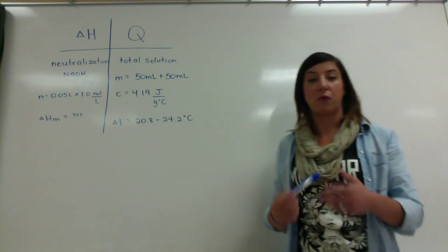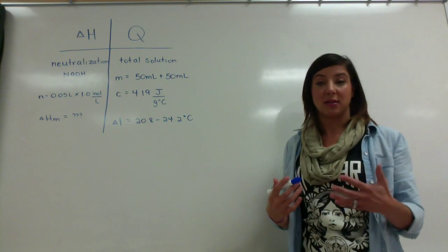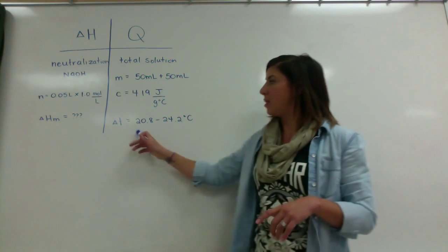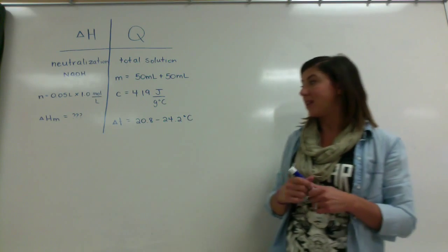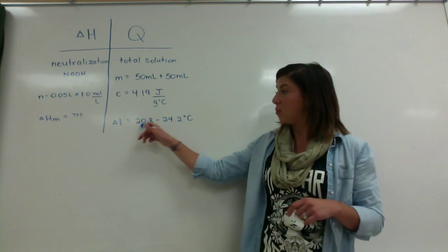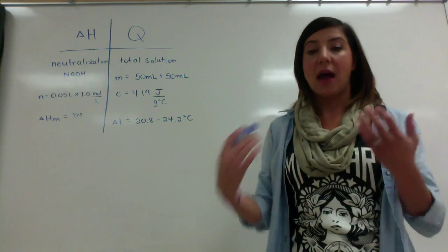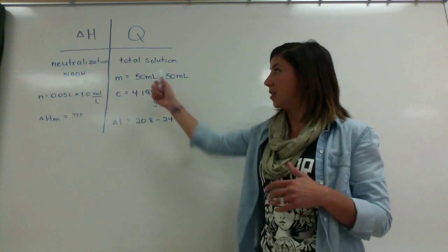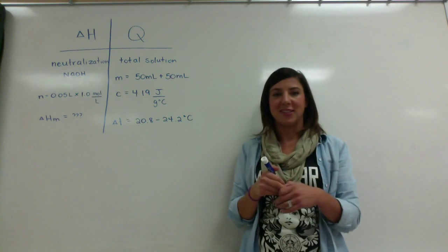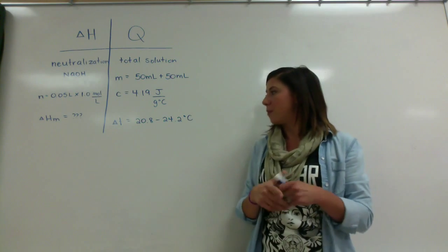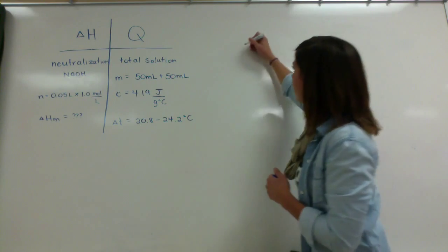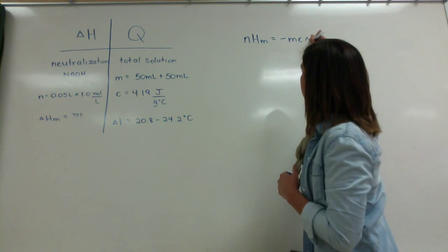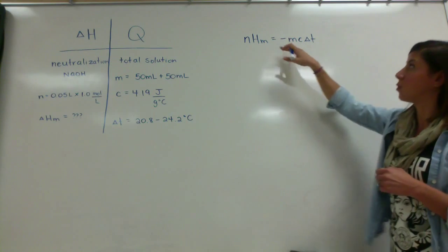We assume the heat capacity of the solution is 4.19 J/g°C since it's an aqueous solution. The initial temperature is the average of 17.4 and 24.2, which is 20.8°C, because the heat capacities and volumes are equal so they meet in the middle. The final temperature is 24.2°C, so the change in temperature goes from 24.2 down to 20.8. We plug into NHm = -mCΔT: 0.05 L × 1.0 mol/L for moles, 100 g × 4.19 J/g°C × (20.8 − 24.2) for the heat side.